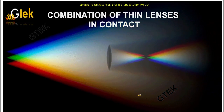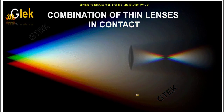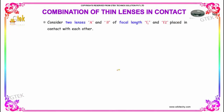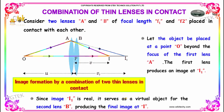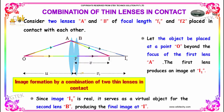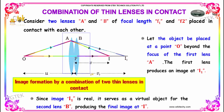Let's look at the concept of combination of thin lenses in contact. Consider two lenses A and B of focal length F1 and F2, which are placed in contact with each other.